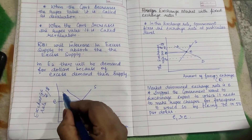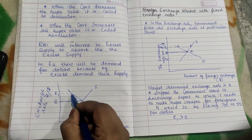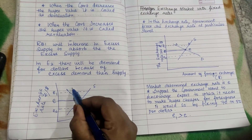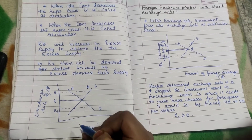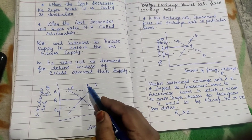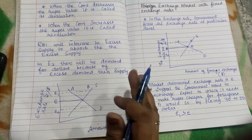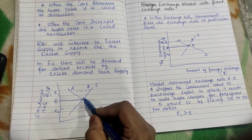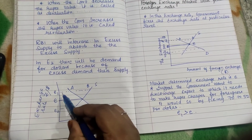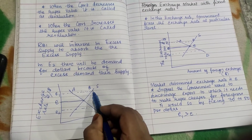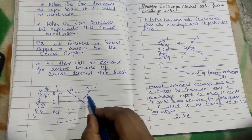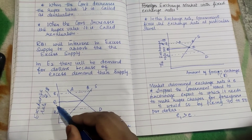When we move from E to E1, demand is less and supply is more — this is excess supply, marked as points A and B on the diagram. When the government wants to encourage exports, it makes the rupee cheaper by fixing a higher exchange rate — say 70 instead of 50 rupees — shifting equilibrium to E1. The RBI then intervenes to absorb this excess supply of dollars.